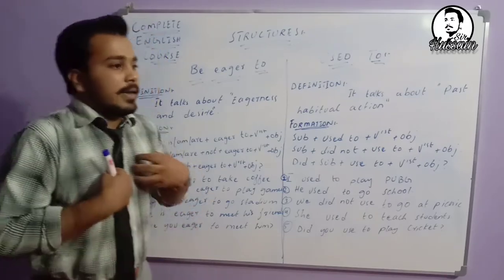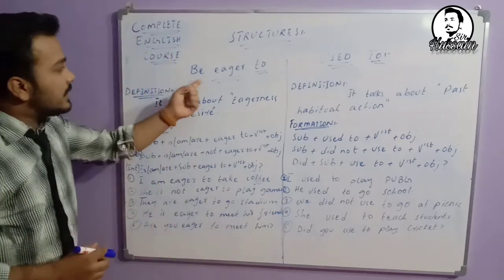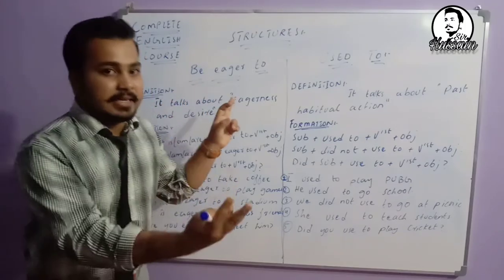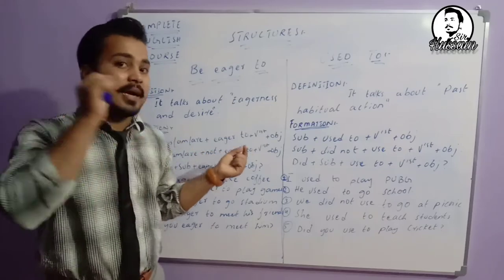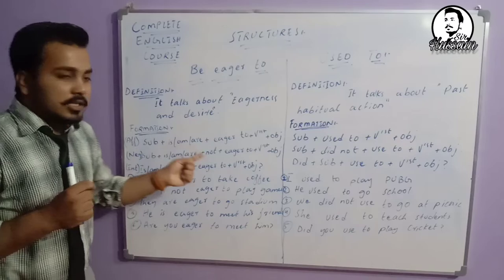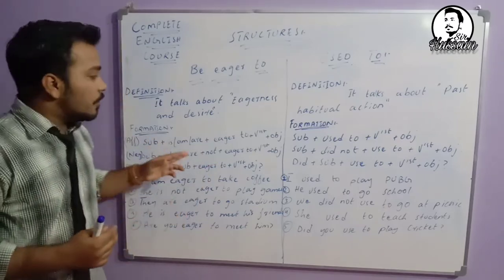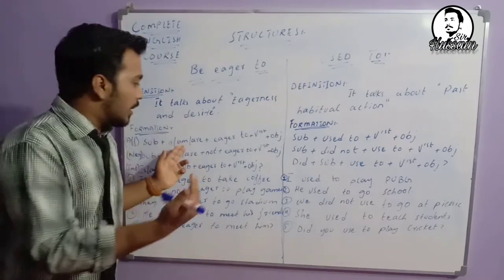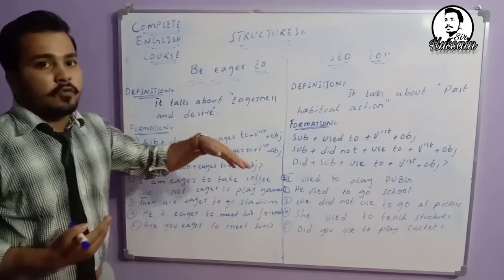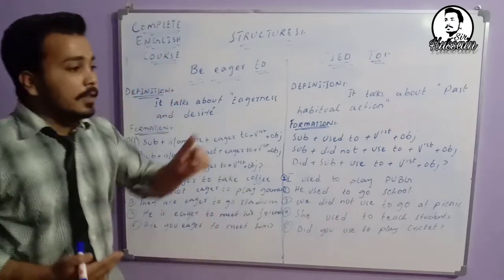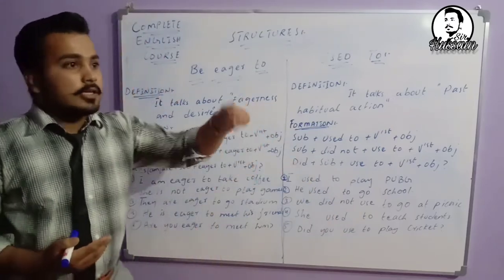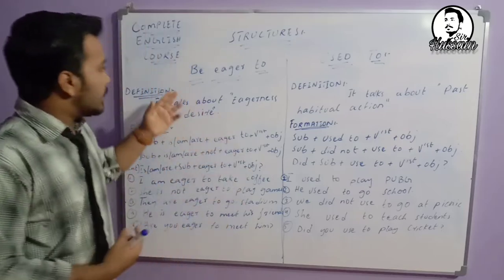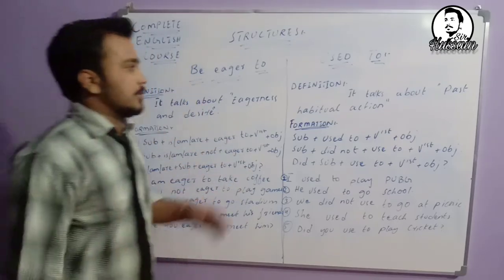This structure basically talks about chaahat ya bekaraari. The 'be' here is in first form. The second form is 'was/were' and the third form is 'been'. If you want to say something in past — like 'woh baykaraar tha bahar jane ke liye' — use 'was': 'She was eager to go outside.' For present perfect: 'He has been eager to play.' So you can use is/am/are, was/were, or has/have been according to context.